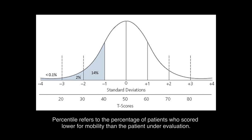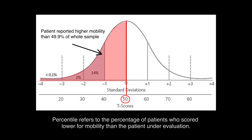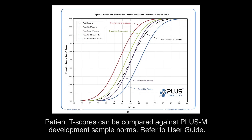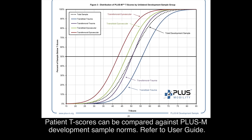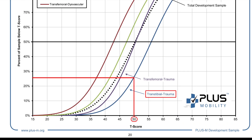In this example, the patient had a T-score of 50 and a percentile of 49.9%. This means that the patient reported higher mobility than 49.9% of the entire PLUS-M development sample. Patient T-scores can also be compared against PLUS-M development sample norms. In our example, the patient had a traumatic transtibial amputation. For this population, a T-score of 50 indicates that the patient reported mobility higher than 25% of the traumatic transtibial population.